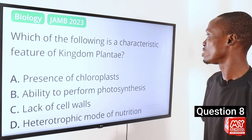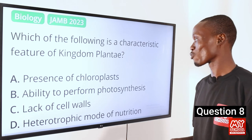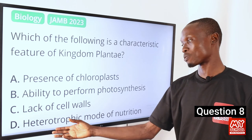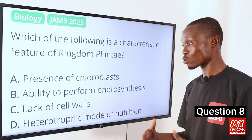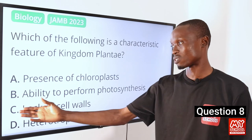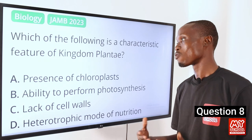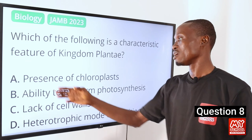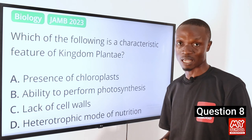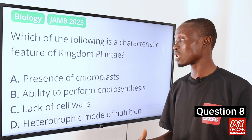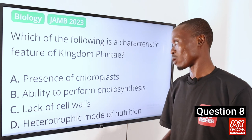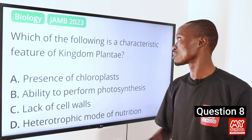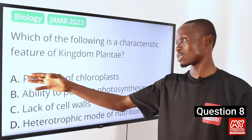Question 8. Which of the following is a characteristic feature of the kingdom Plantae? Option D is incorrect because plants are autotrophs. Option C, lack of cell walls, is wrong because plants have cell walls. Option B is ability to perform photosynthesis, while option A is presence of chloroplasts. The correct answer is option A, presence of chloroplasts, which are the site of photosynthesis in plant cells where light energy is converted to chemical energy. Presence of chloroplasts is a characteristic of the plant kingdom.